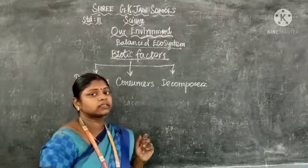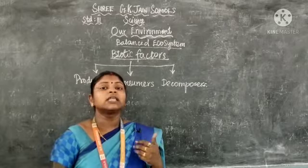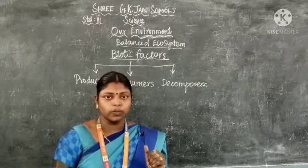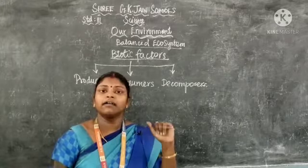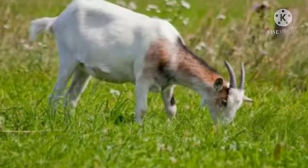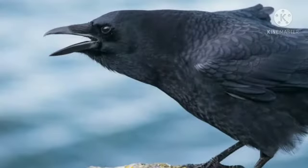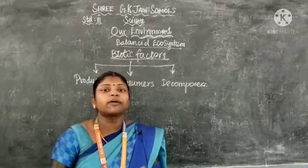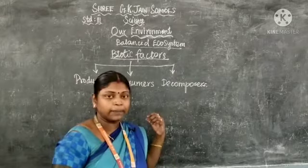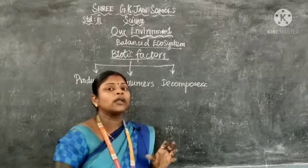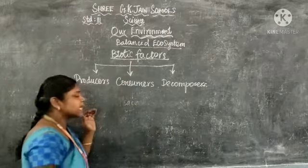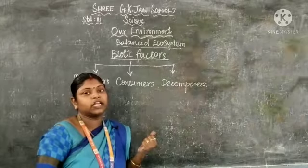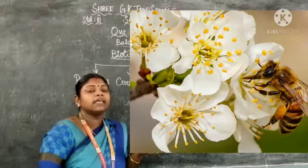The next one is consumers. What does it mean by consumers? The ones who get their food from the producers are called consumers. Examples of consumers are rabbit, cow, goat, human, and crow. We get our food from plants — plants are the producers. Consumers include animals and insects. For example, a honeybee is also a consumer because its food is nectar, which it collects from flowers, a part of a plant.